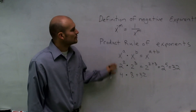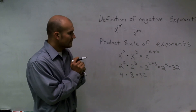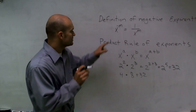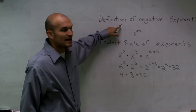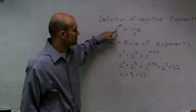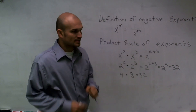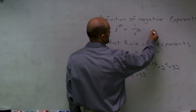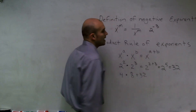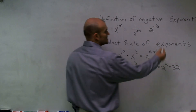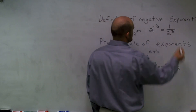So how is the product rule going to help us with negative exponents? The definition of a negative exponent says: if I have x raised to a negative m, where m and x are real numbers, that equals 1 over x to the m. So 2 to the negative third power represents 1 over 2 to the third power.